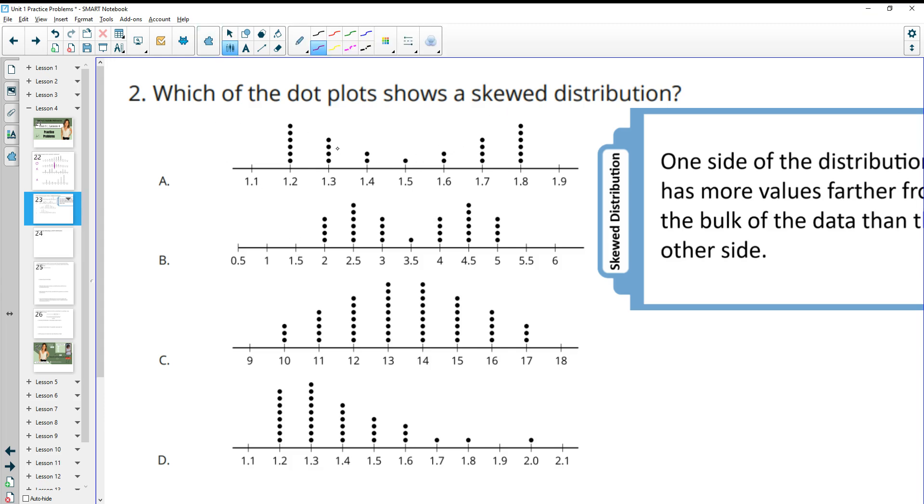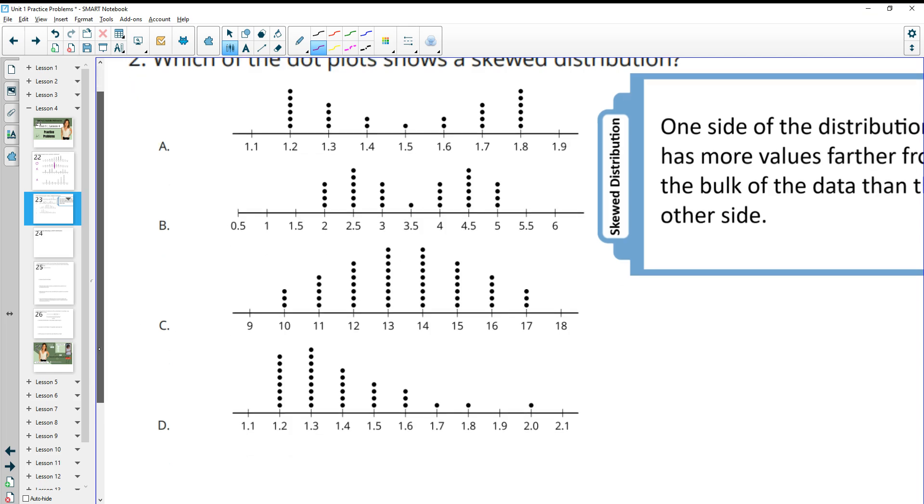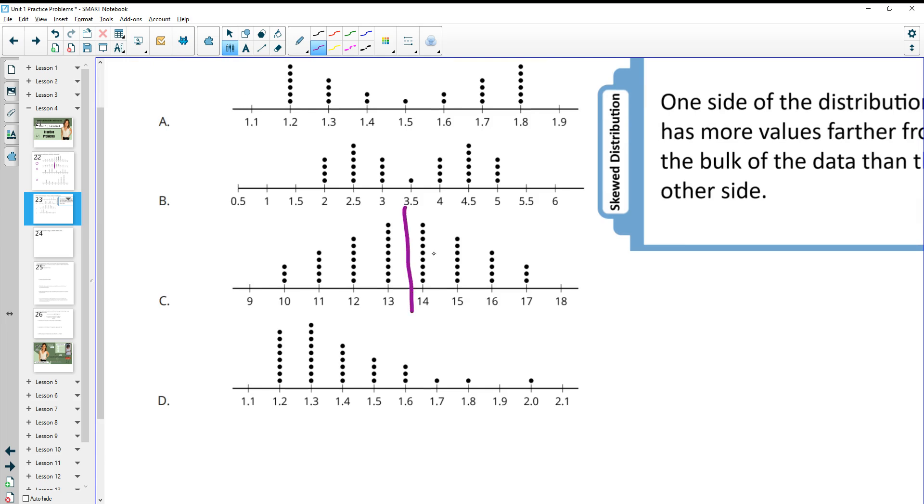So A doesn't really count because it goes down and back up in the middle. So that's really a symmetric distribution. So is B because we kind of see this middle line and it does the same thing in each of those towers. C is the same idea there. And then in D we see this kind of big top here and then all of a sudden it's low on the right-hand side. So this one would be a skewed distribution because we have more values over here further away from the bulk of the data than the other side.